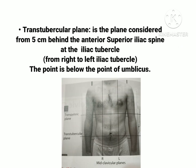The third plane is the trans-tubercular plane. This plane is considered from 5 centimeters behind the anterior superior iliac spine — at the point of the iliac tubercle. You take the first point from the right iliac tubercle and the line goes across to the left iliac tubercle. You should remember that this plane is also a horizontal plane and it is just below the level of the umbilicus.